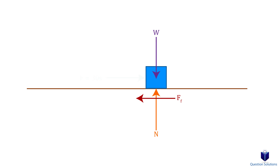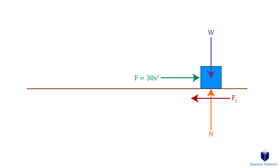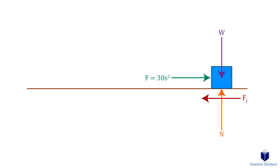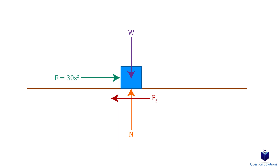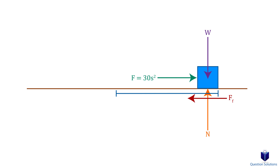Now let's say that the force we apply is not a constant, but rather a variable force dependent on the distance the box travels. To calculate the work, we will integrate. Let's say the box moved 3 meters, so the lower bound starts at 0 meters and the upper bound is 3 meters. We integrate the force to figure out the work that's done.